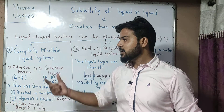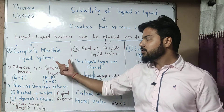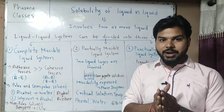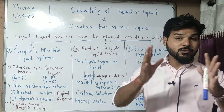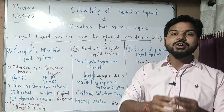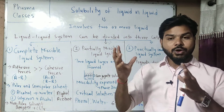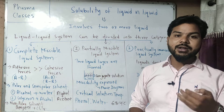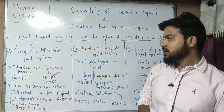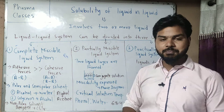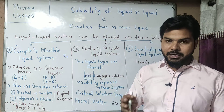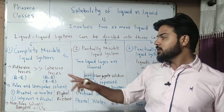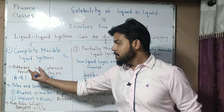First of all, the completely miscible liquid system — this liquid system is completely mixed. When a liquid system contains two liquids, we call it binary solutions. Binary solutions contain two components, so it is called a binary liquid system.